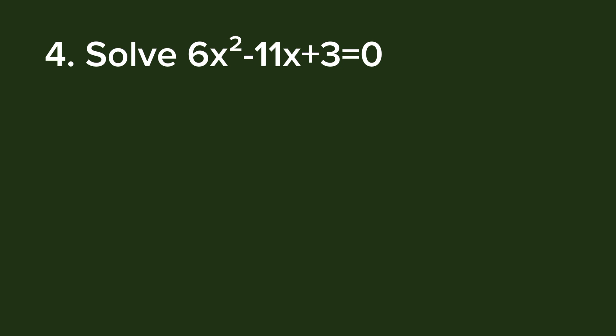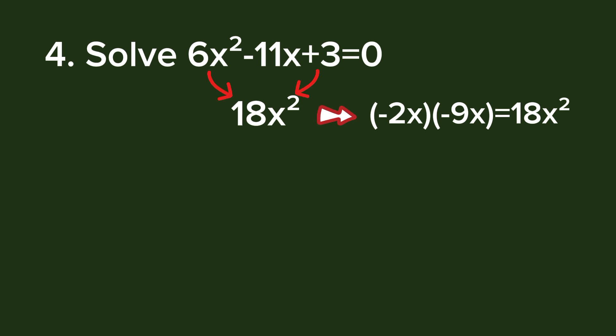We begin by multiplying 6x² and 3, which gives 18x². We factor 18x² and ensure those factors when added equal -11x. The factors of 18x² are -2x and -9x. We verify: (-2x)(-9x) = 18x², and -2x + (-9x) = -11x. So we substitute -2x and -9x for -11x in the equation.